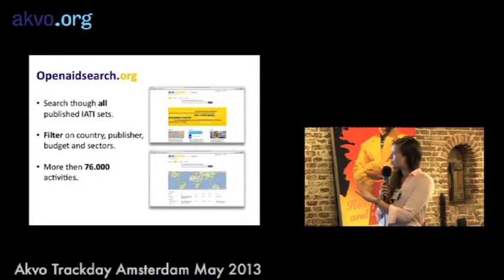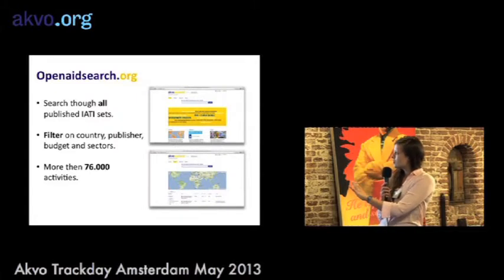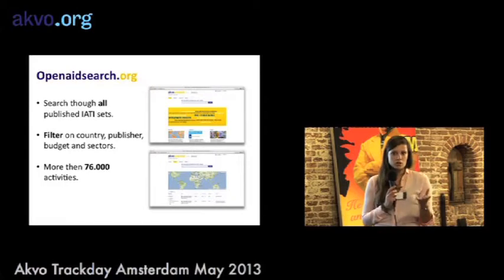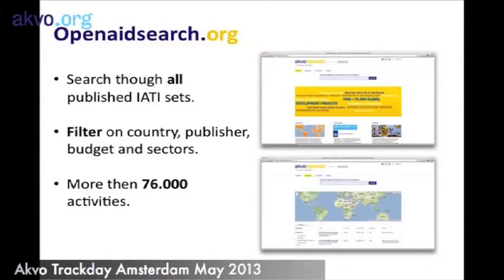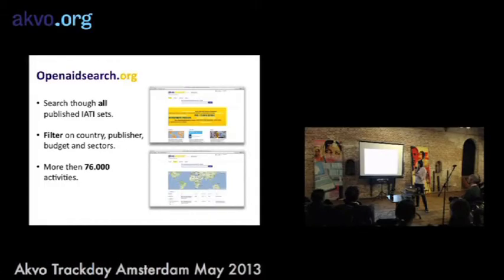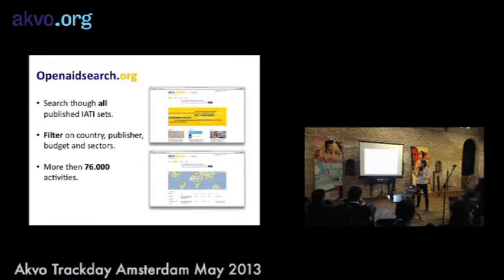On OpenAidSearch.org all published IATI datasets are read in, so you can see not only the Dutch one but all files published in the IATI format. You can filter on country, publisher, budget, and sectors. This really brings us one step closer to finding out what's happening somewhere and who is working where. At the moment there are more than 76,000 activities in OpenAidSearch.org.